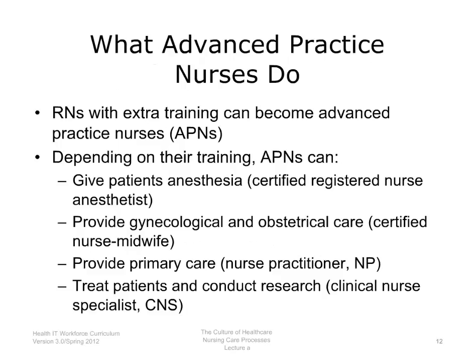Advanced Practice Nurses, or APNs, are registered nurses who have pursued extra education. Advanced practice nurses can provide a wider range of medical services than a registered nurse can. There are four types of advanced practice nurses: certified registered nurse anesthetists, certified nurse midwives, nurse practitioners, and clinical nurse specialists. A certified registered nurse anesthetist can give anesthesia to patients. A certified nurse midwife can provide certain types of gynecological and obstetrical care to women. A nurse practitioner often provides primary care to patients and can write prescriptions. A clinical nurse specialist who specializes in one area of medicine can treat patients, conduct research, and work as an administrator, among other tasks.